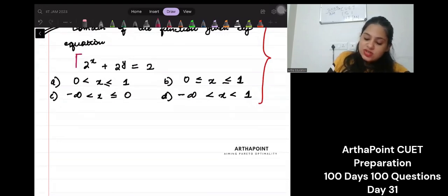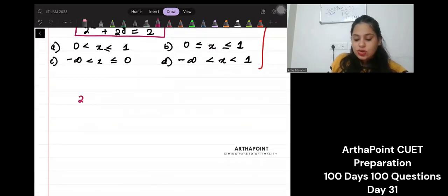What we can do is just try to solve this equation. We will have 2 to the power x plus 2 to the power y is given as 2, right?